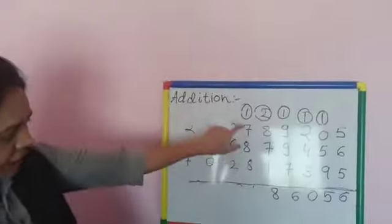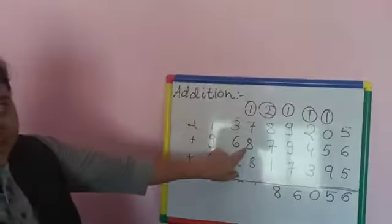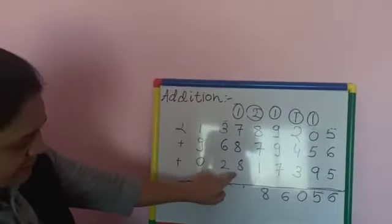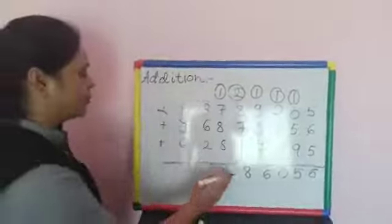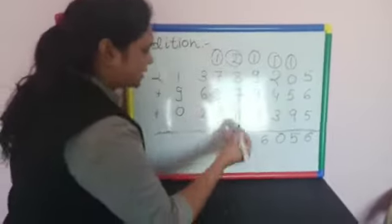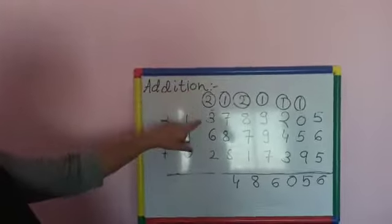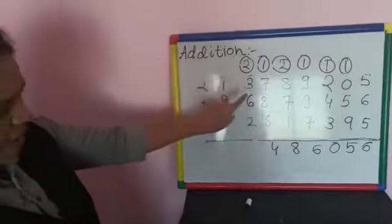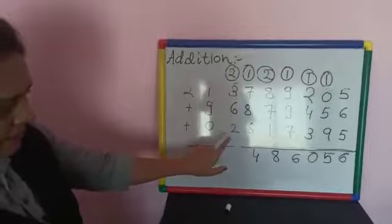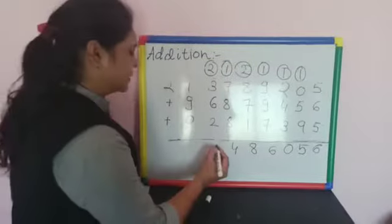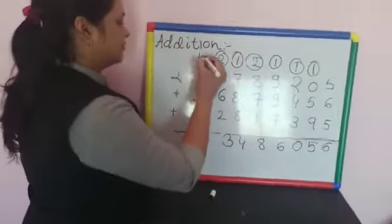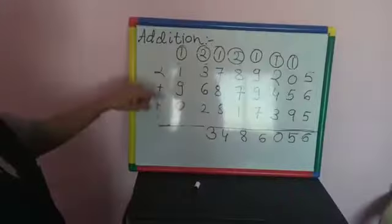Now, 1 plus 7 is 8. 8 plus 8 is 16. Then 16 plus 8 is 24. Then 4 is here, 2 is carry over. Then 2 plus 3 is 5. 5 plus 6 is 11. 11 plus 2 is 13. Then 3 is here, 1 is carry over.